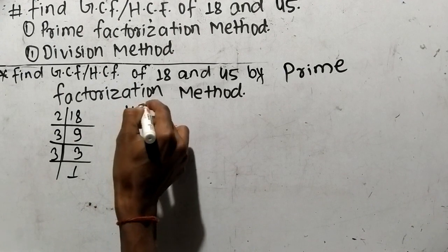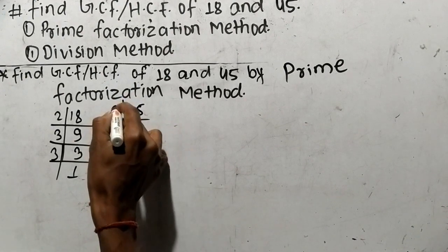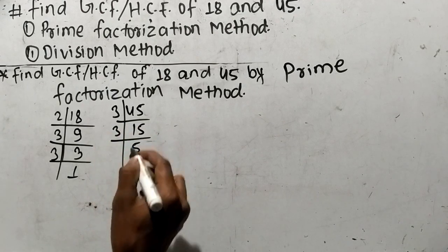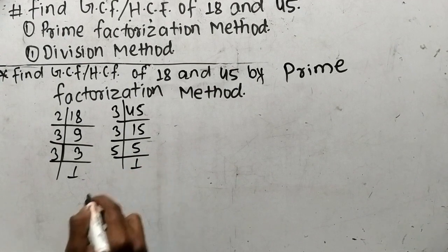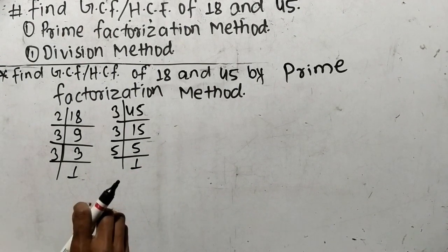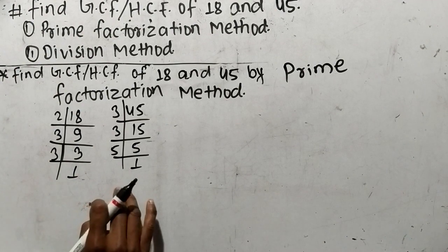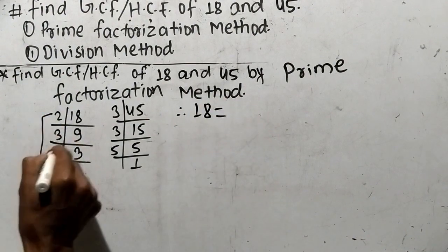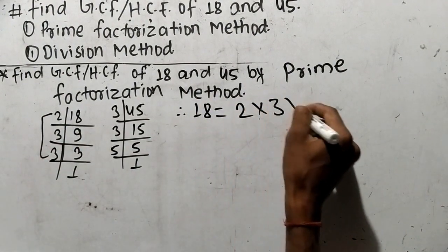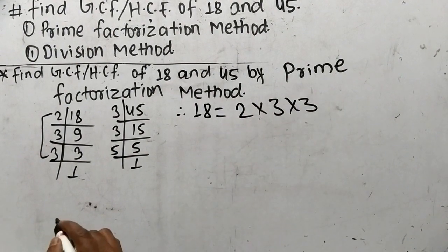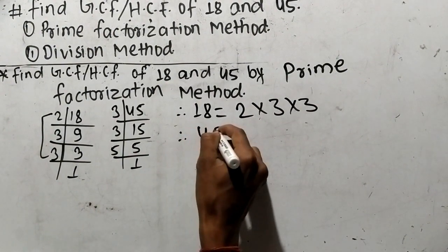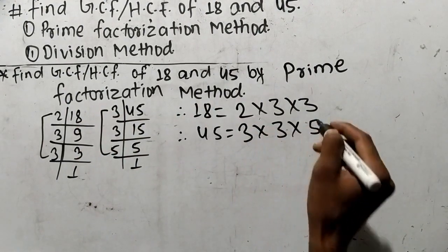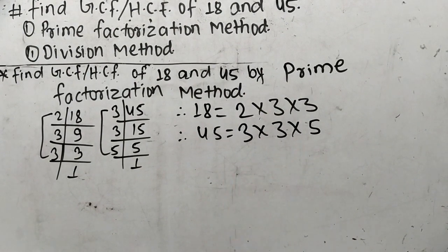In the same way we shall find out the prime factors of 45. It is 3 times 15, which equals 45, like 3 times 5 equals 15, and 5 times 1 equals 5. So we have found out the prime factors of 18 and 45. From this, we can write 18 is equal to 2 times 3 times 3, and 45 is equal to 3 times 3 times 5.